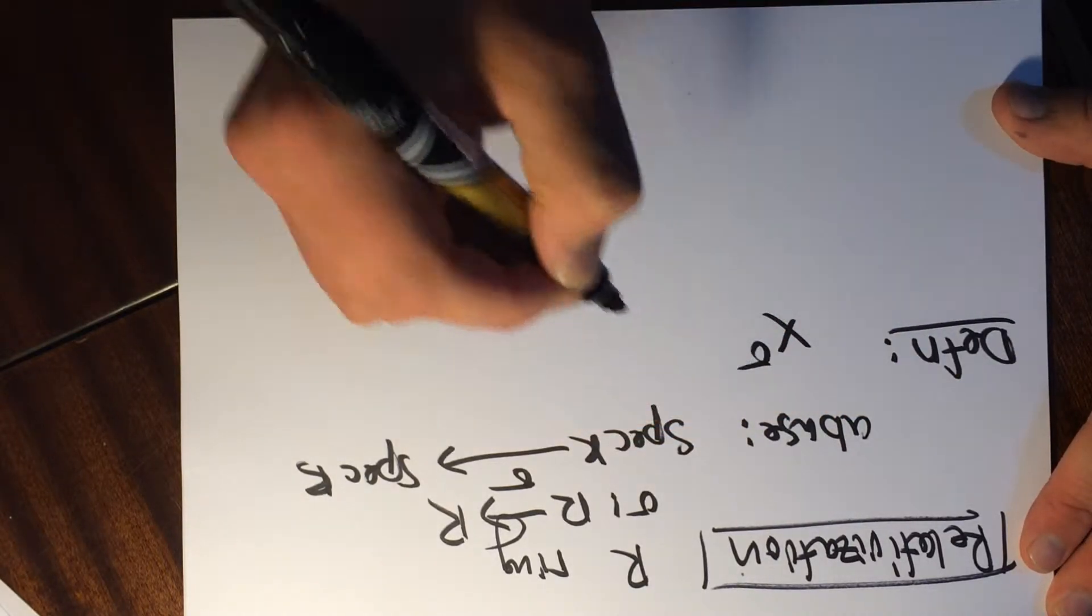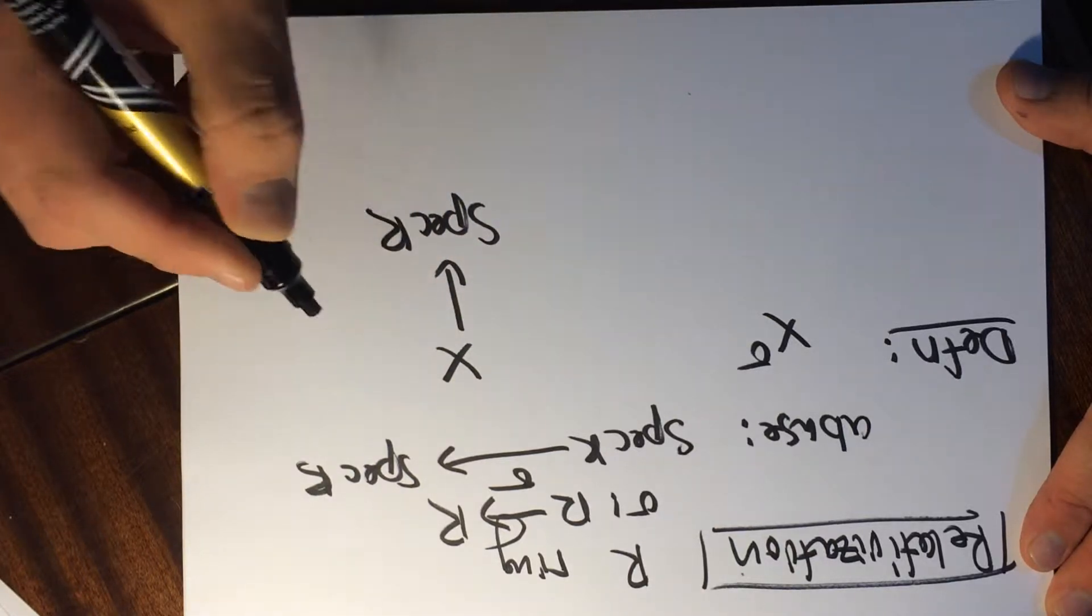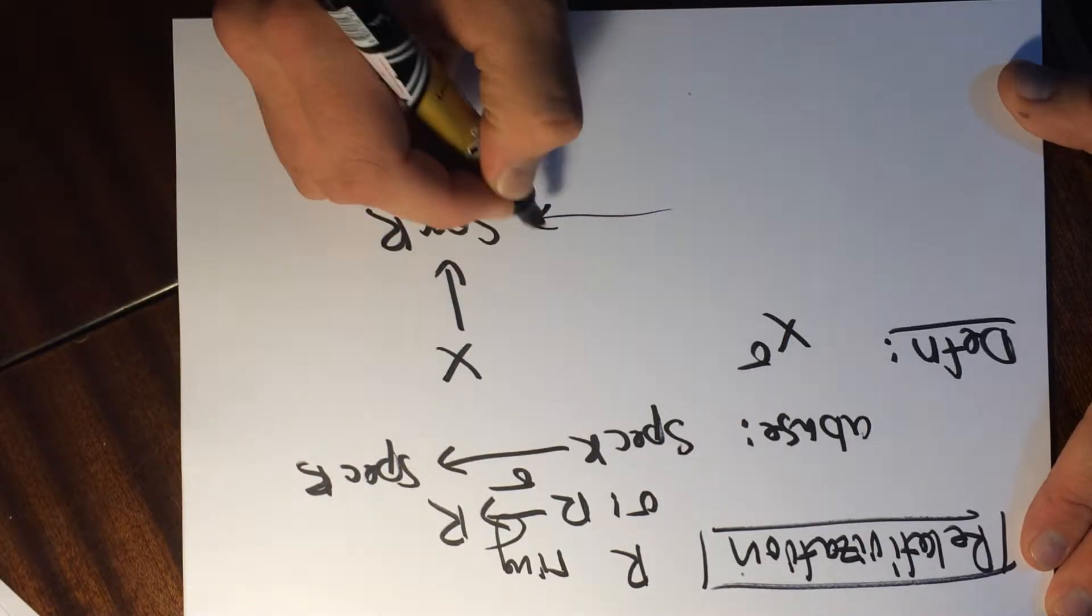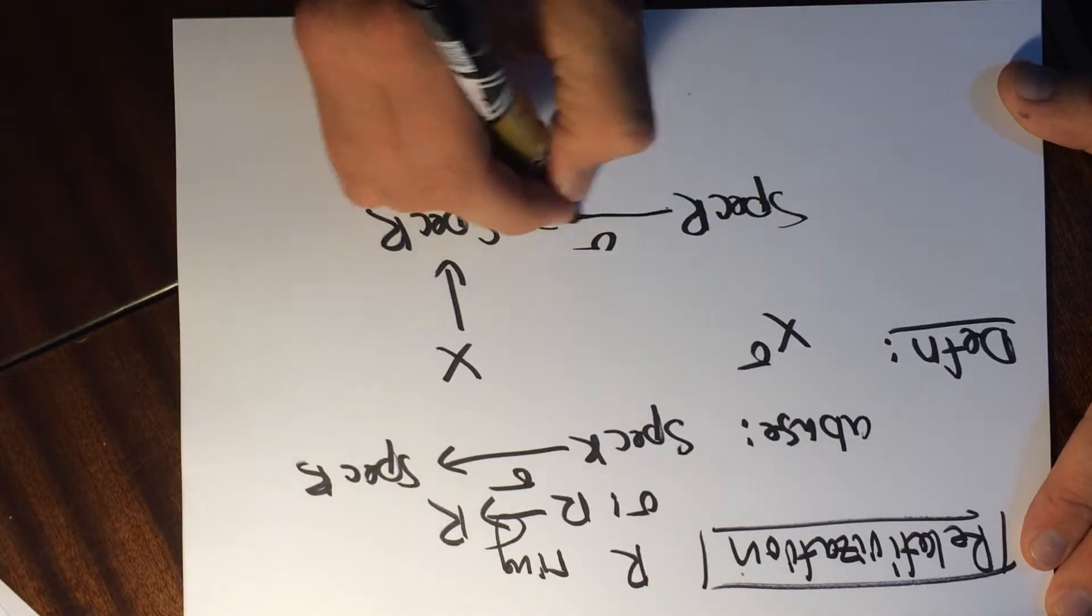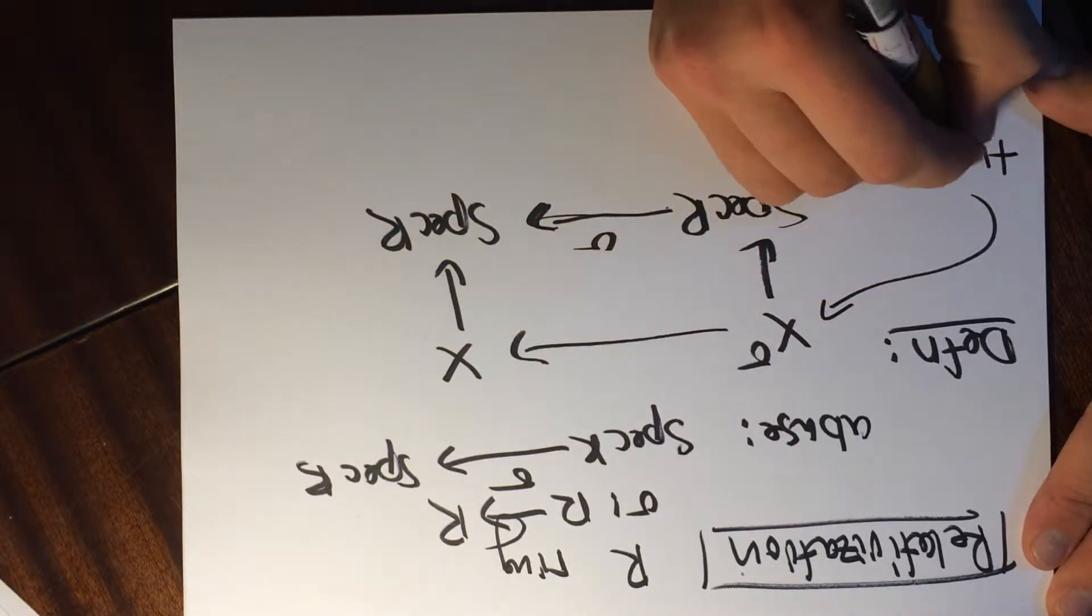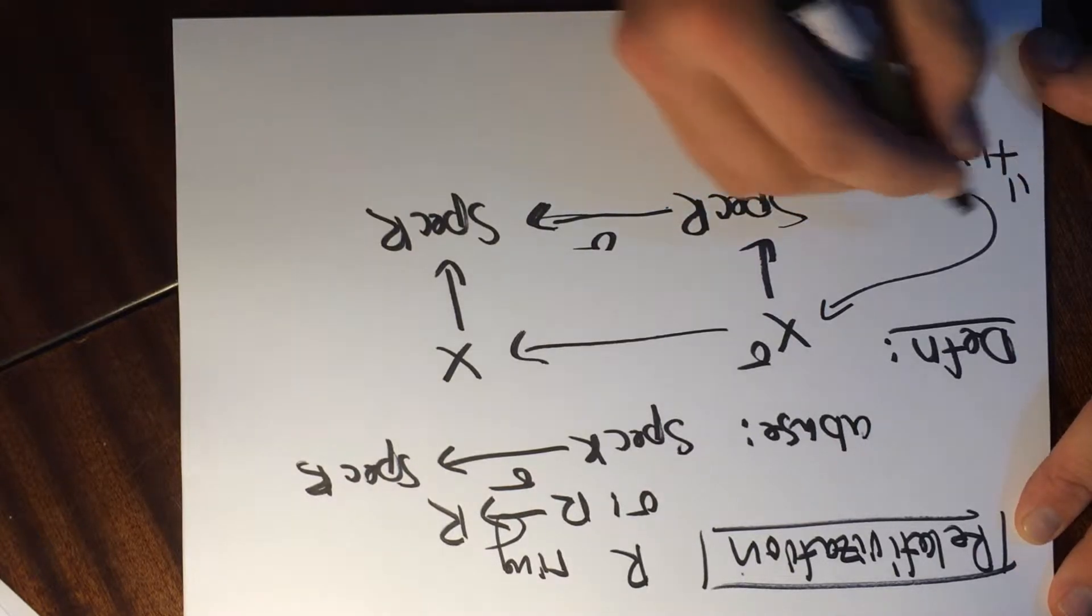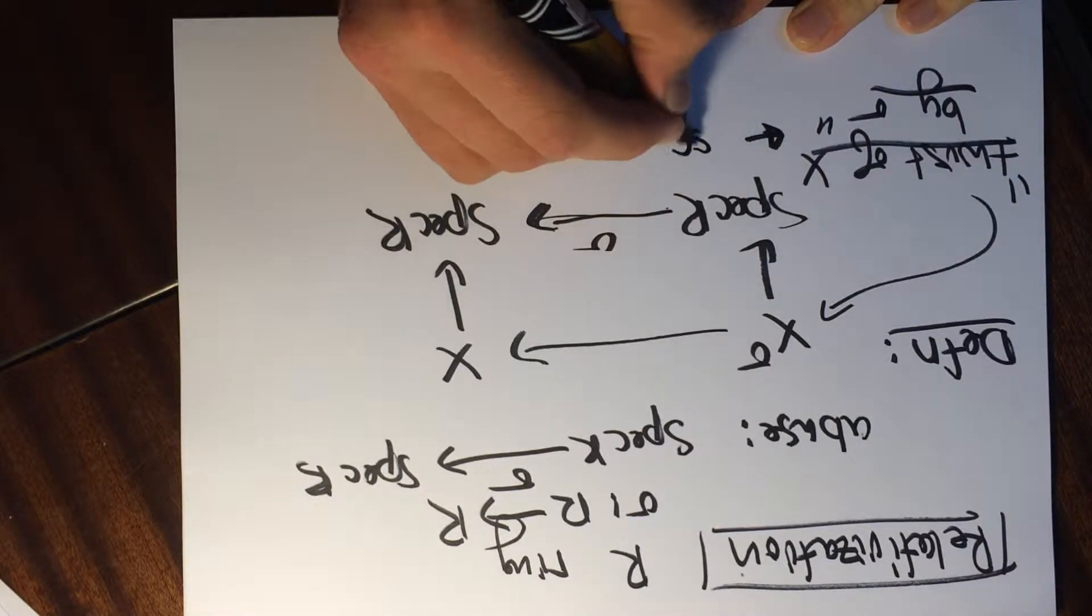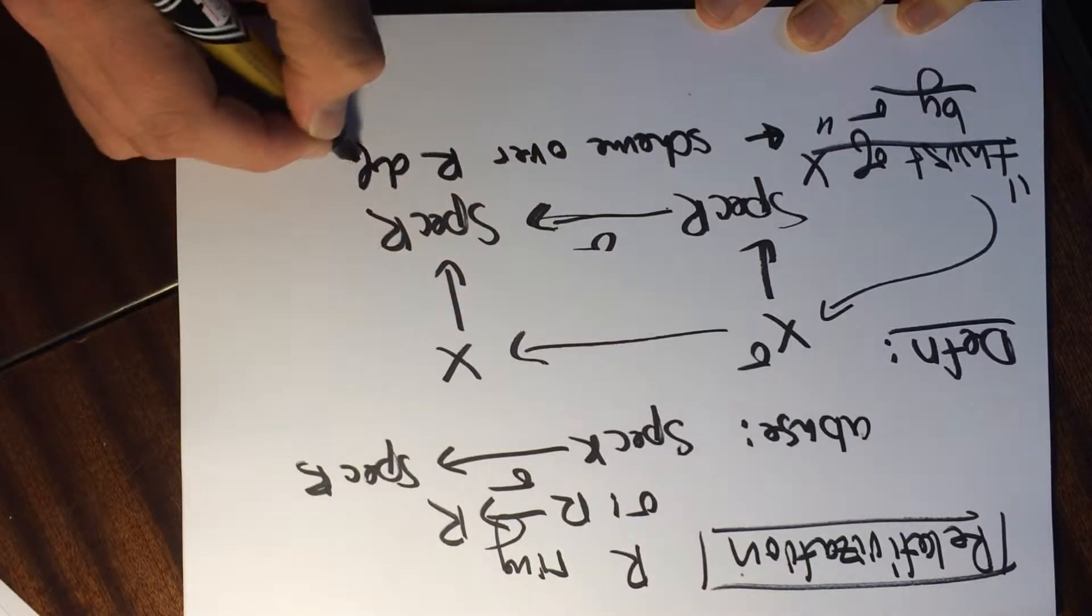So the definition here is going to be of X sigma. The idea is that we have a scheme X over R. So we start with a scheme X over R. And what you can do is you can take sigma here. There's this map here. And what you can do is just form this fiber product. So this is the twist of X. This is what I'll call the twist of X by sigma. There's all sorts of twists of X. And this is defined by the fiber diagram, the scheme over R defined by the fiber diagram.